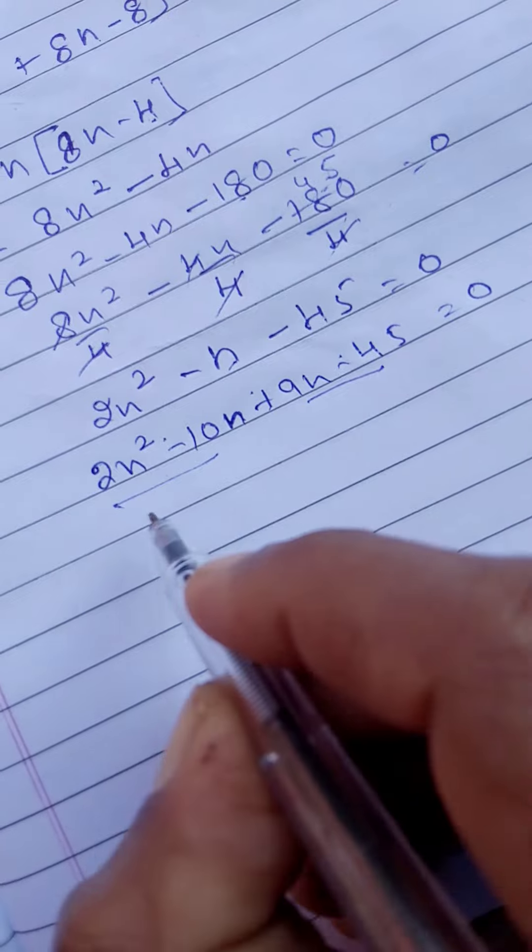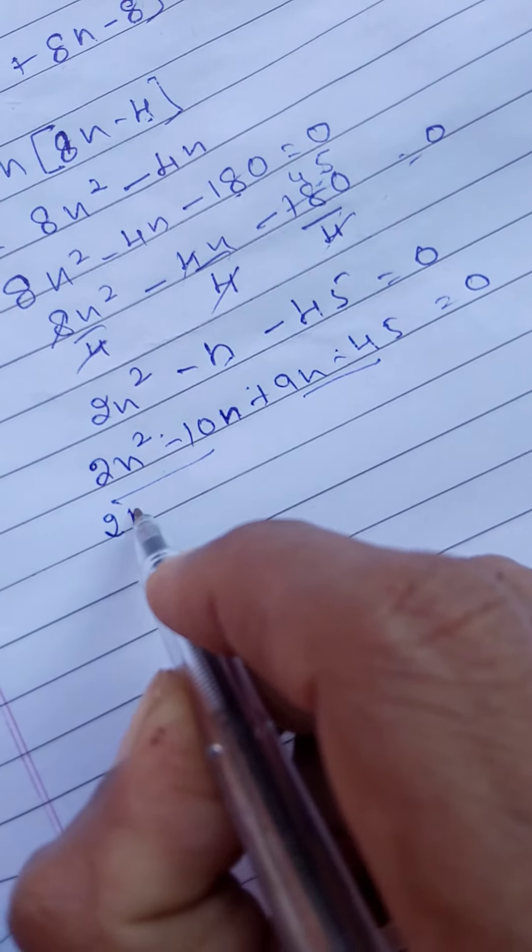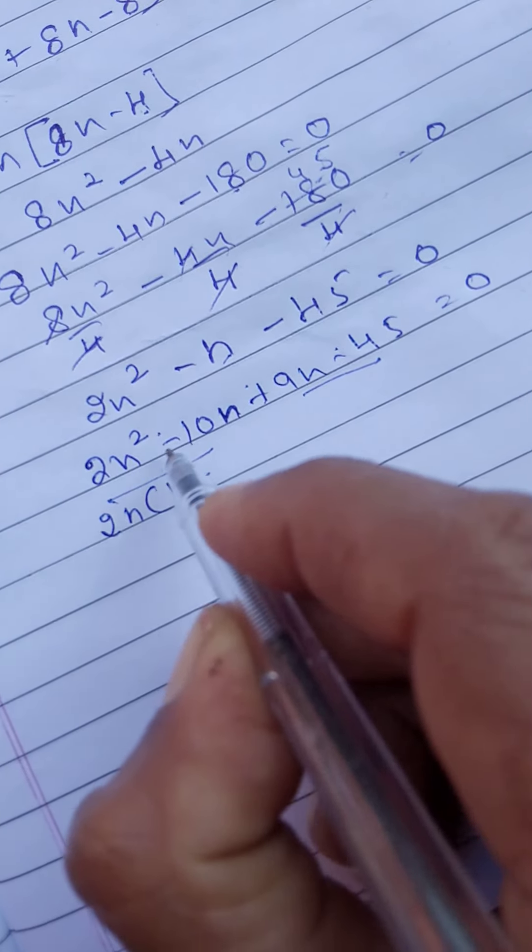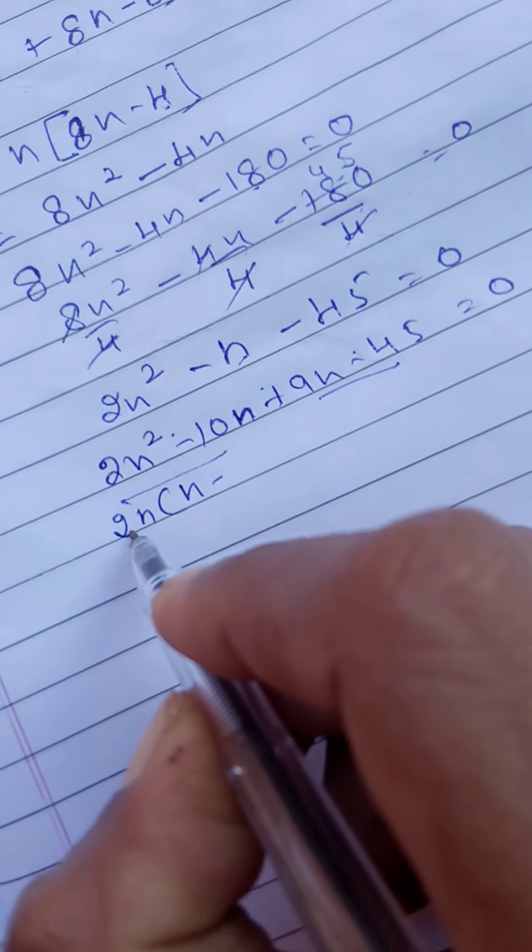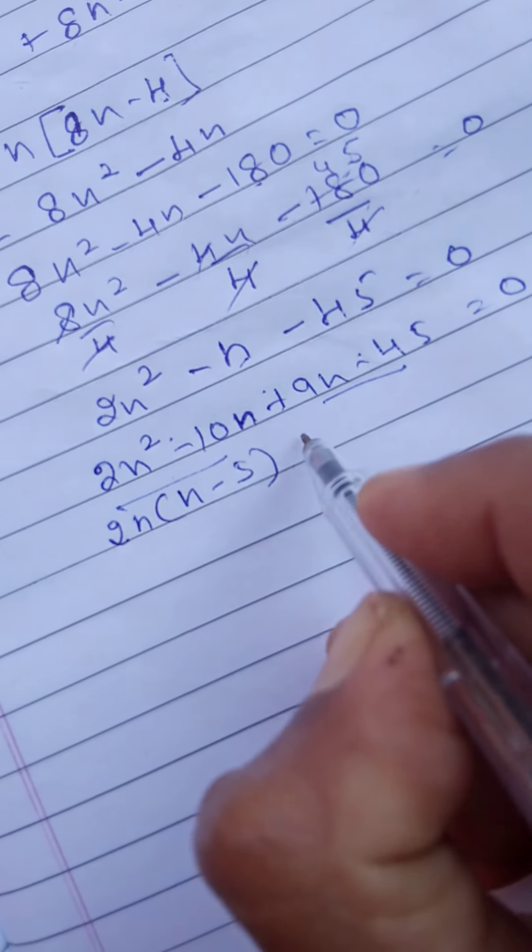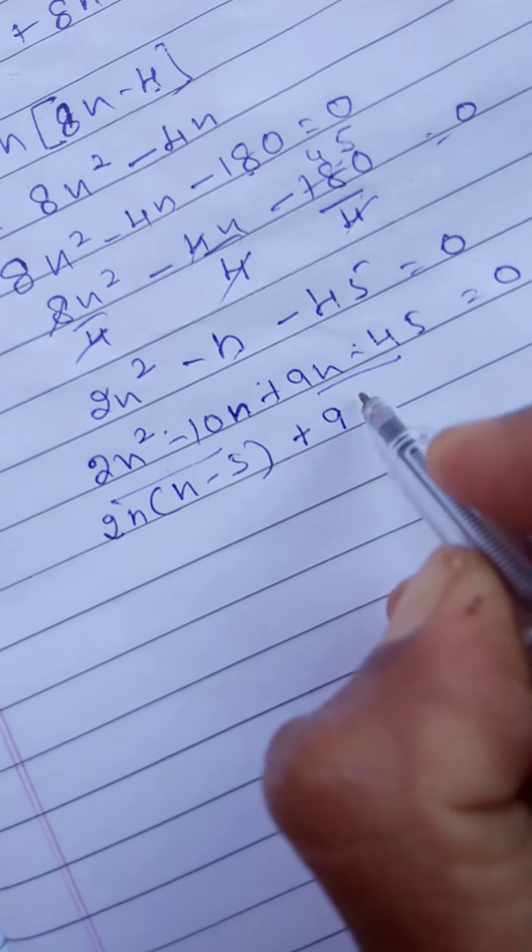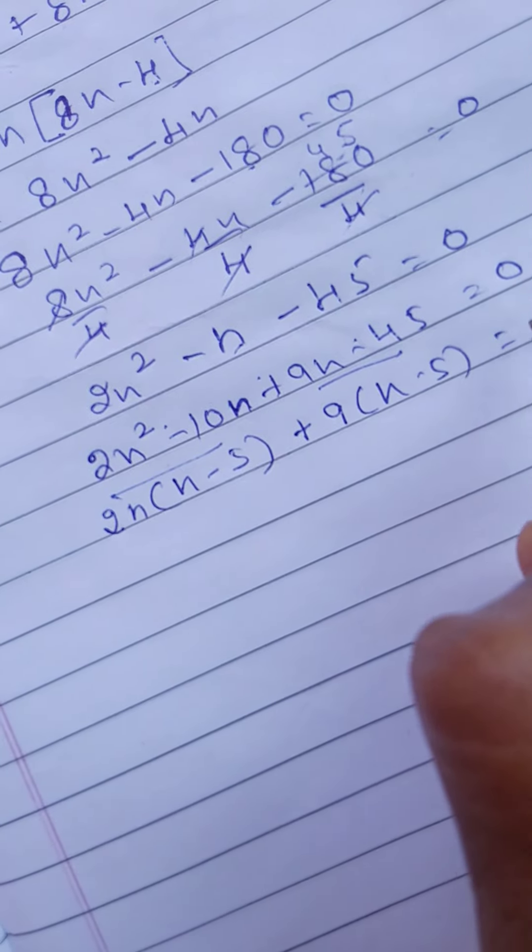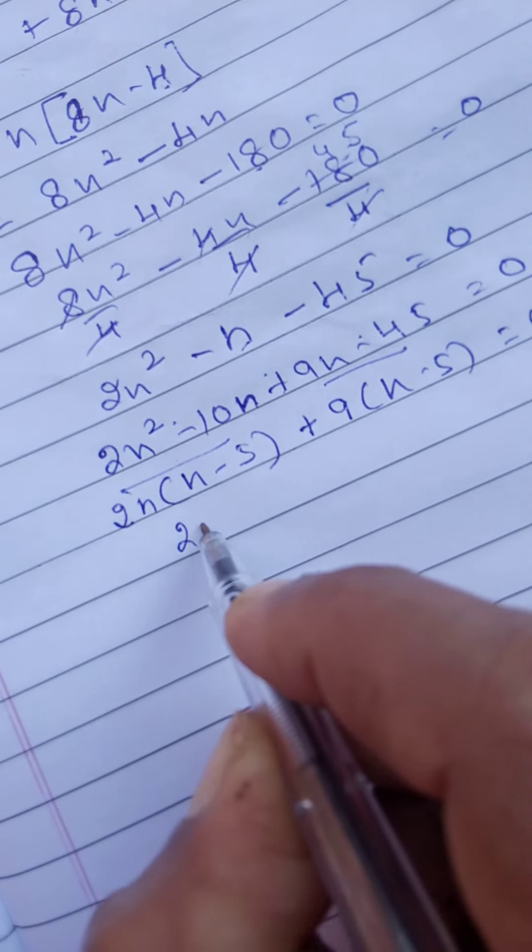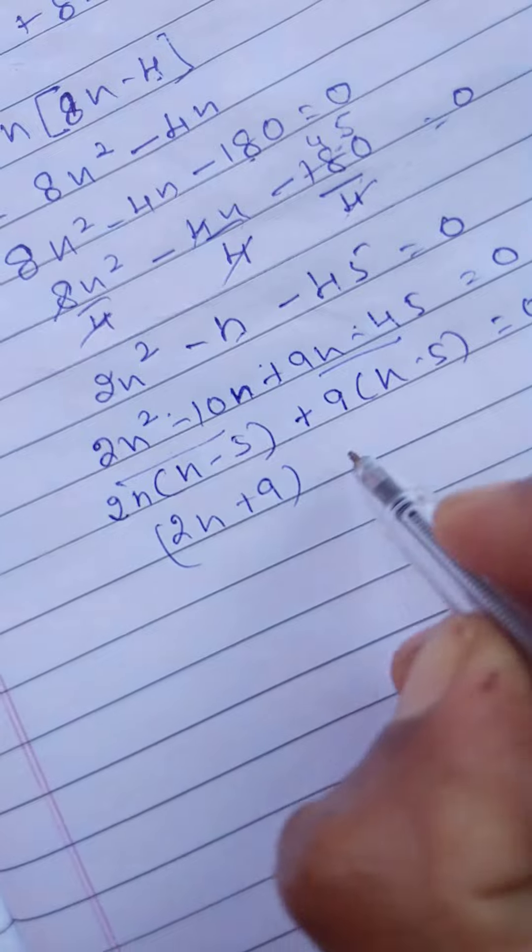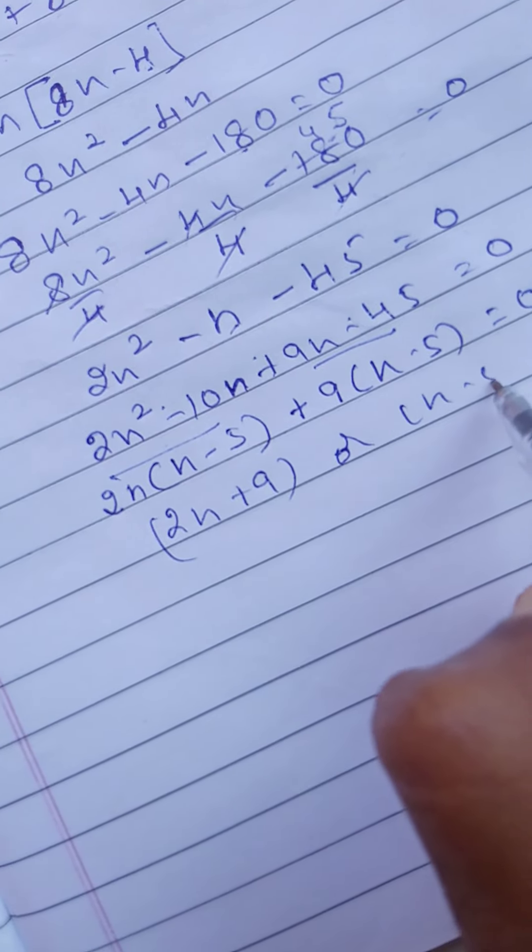We should make two groups. Take 2n outside. 2n is the common. n minus 5 plus take 9 as the common. n minus 5 is equal to 0. So, 2n plus 9 or n minus 5.